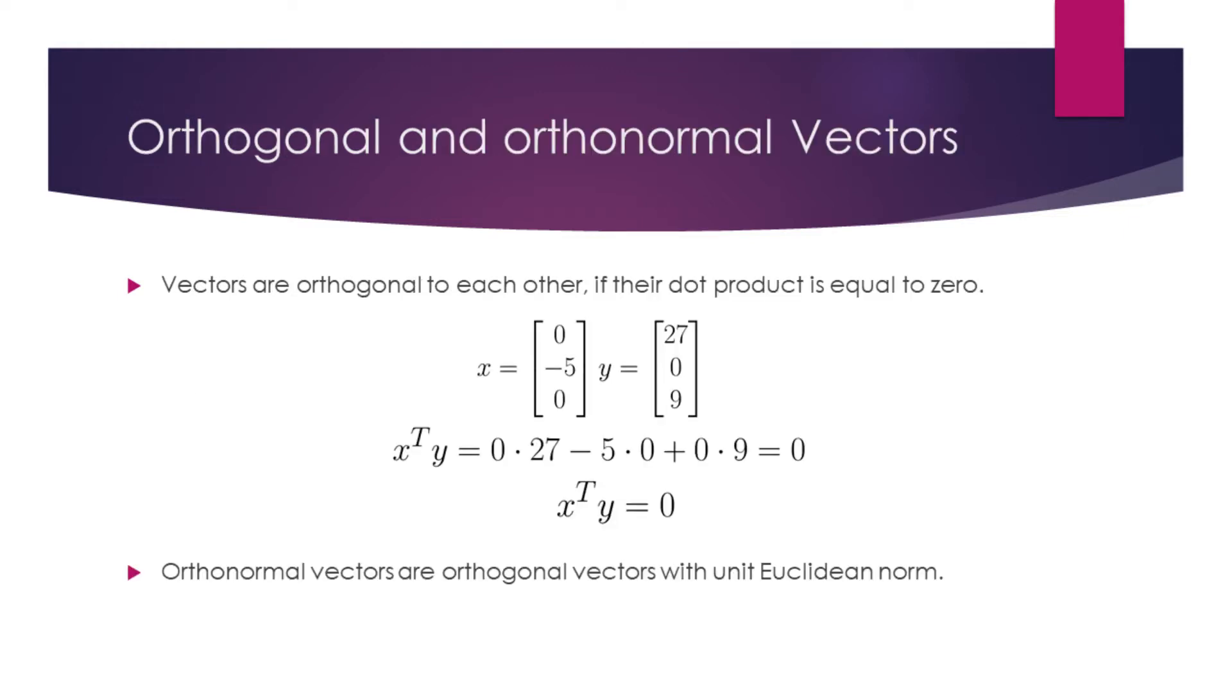Vectors are orthogonal to each other if their dot product is equal to 0. Consider the vectors x and y. The dot product of these vectors result in 0, so they are orthogonal to each other.